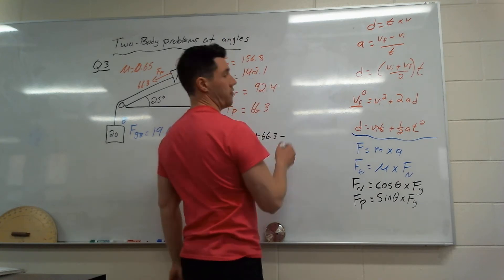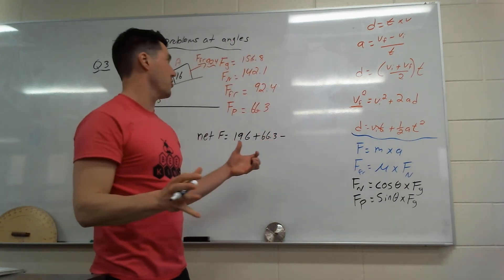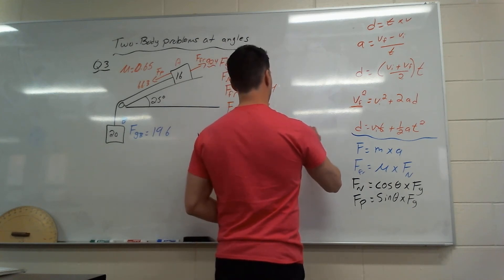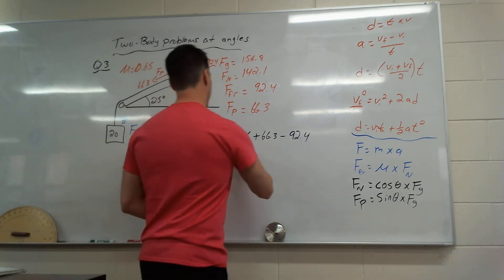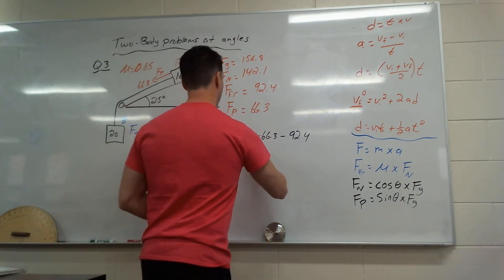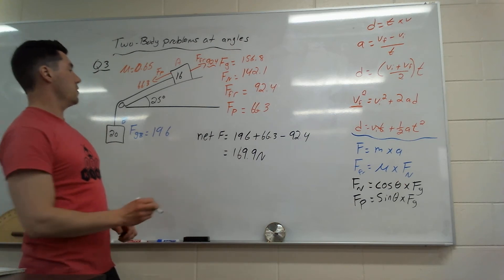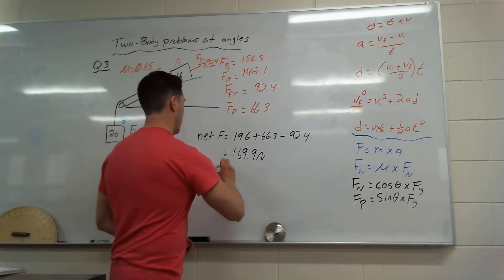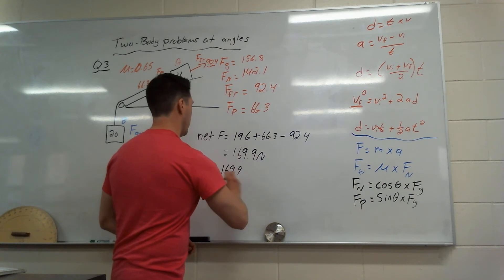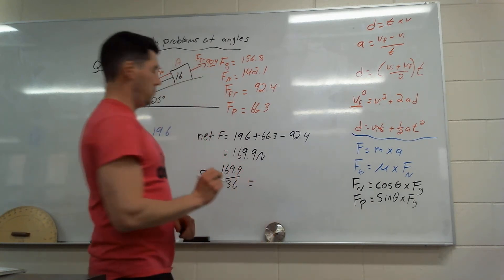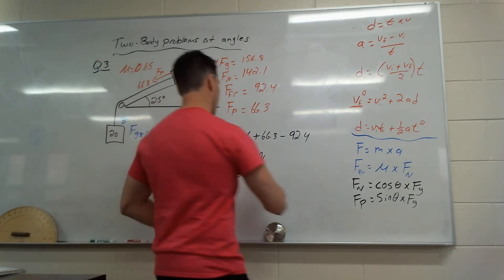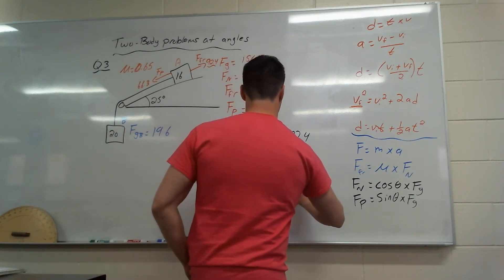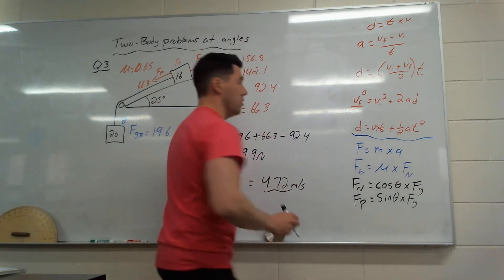And then minus that force of friction. Friction's always going in the opposite direction. So 92.4. So I get a net force of 169.9. Cool. There's my net force. Acceleration equals that 169.9 divided by 36, my total mass, both masses together. And then I get an answer of 4.72 meters per second squared.